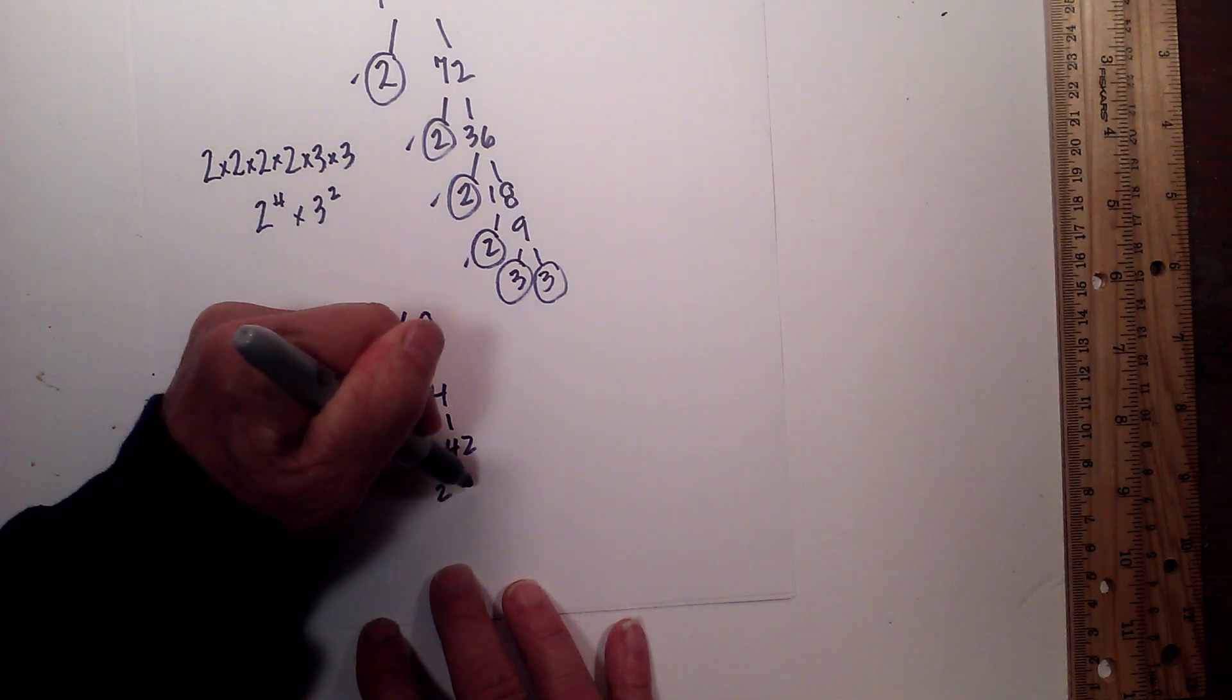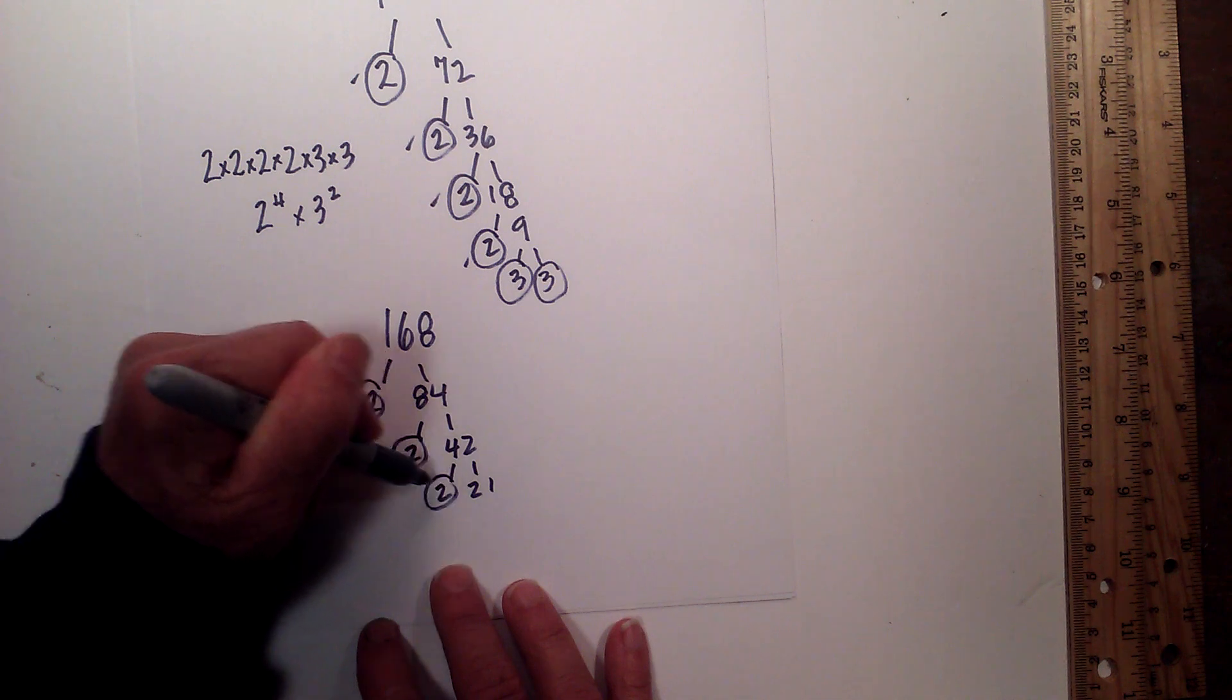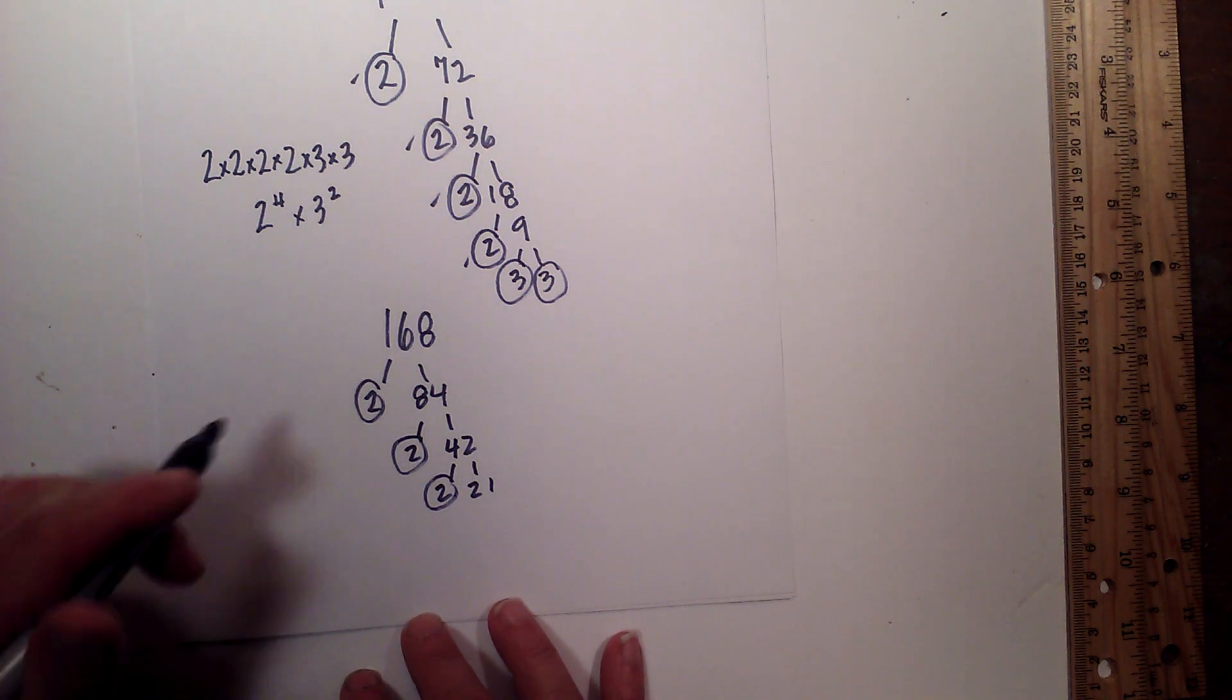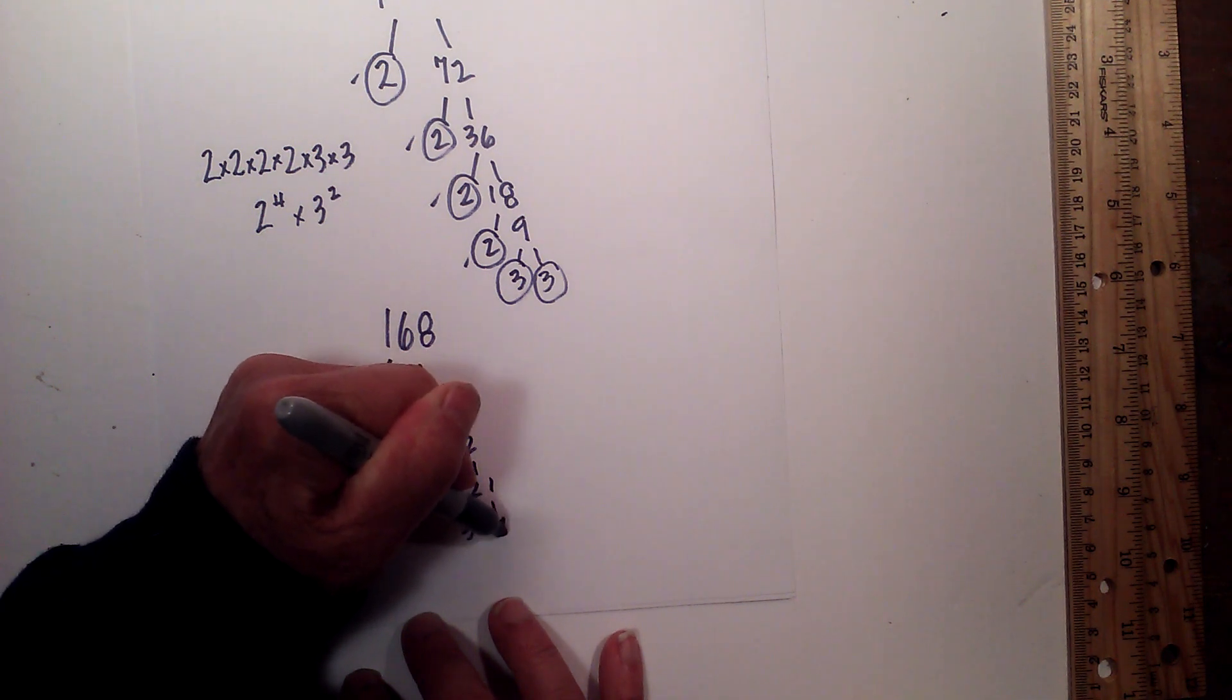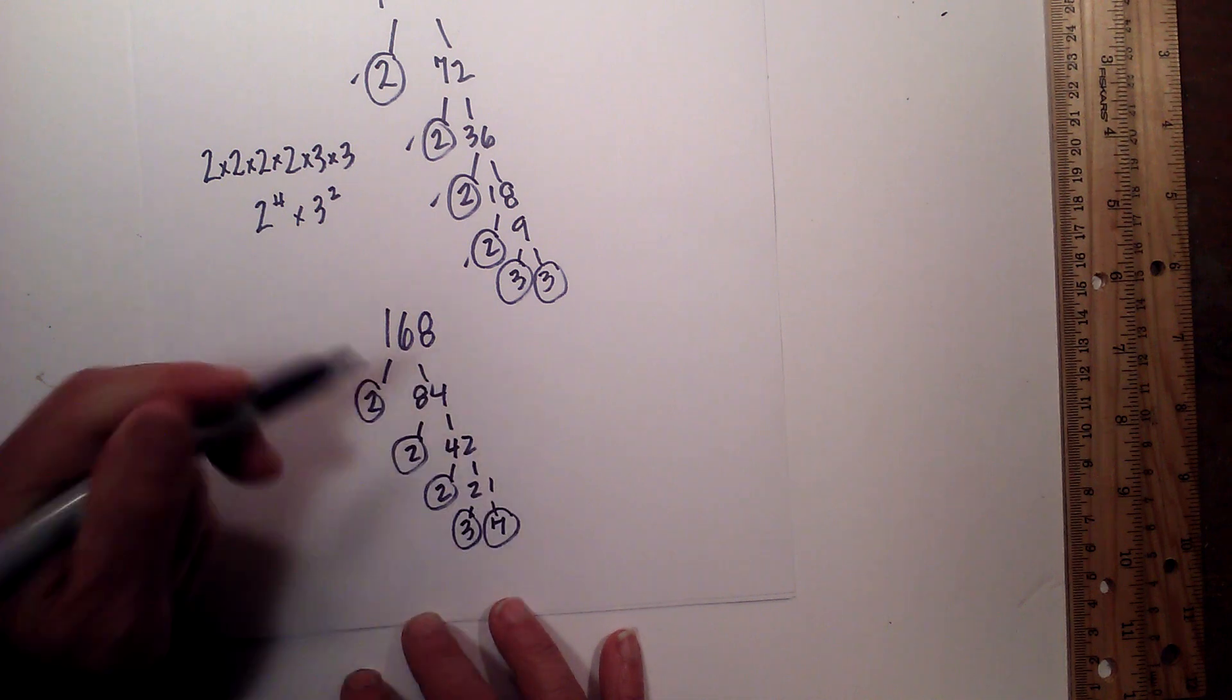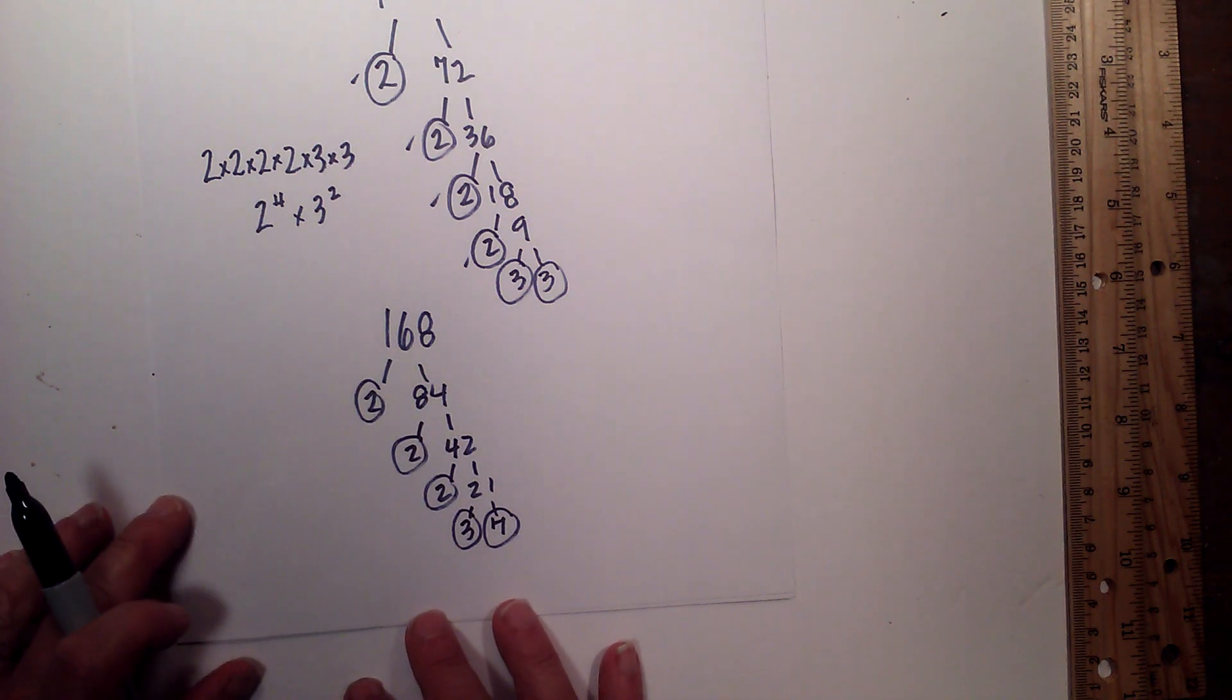Now 2 times 21 equals 42. Circle the 2 because it is prime. And now 3 times 7 equals 21. Circle the 3 and the 7 because they are both prime.